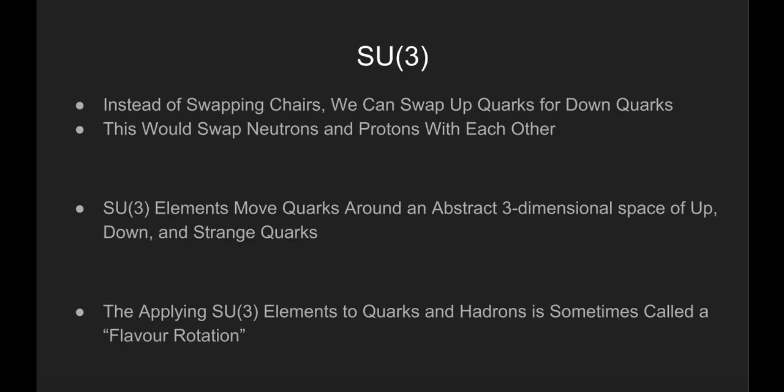If we swap two chairs positions, this transformation would be called an element in the symmetry group. There is an element in the SU3 group that swaps all up quarks for down quarks and vice versa. In doing that, this transformation would also make every neutron a proton and every proton a neutron.